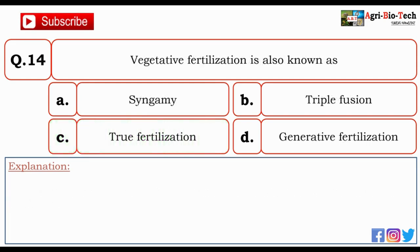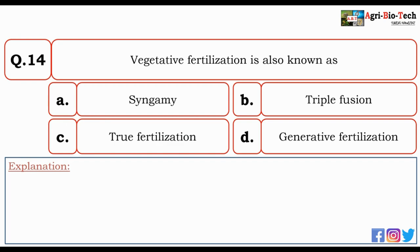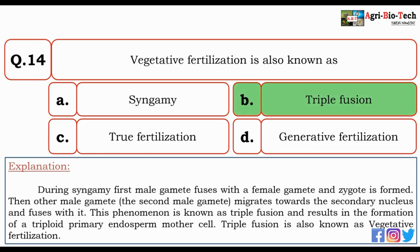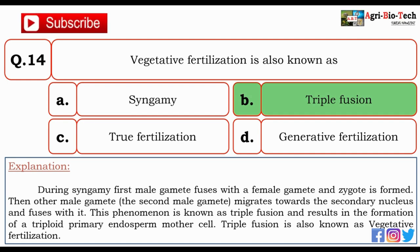Next question: vegetative fertilization is also known as — syngamy, triple fusion, true fertilization, or generative fertilization? The correct answer is B — triple fusion. During syngamy, the first male gamete fuses with the female gamete to form the zygote. Then the second male gamete migrates toward the secondary nucleus and fuses with it. This phenomenon is known as triple fusion, resulting in the formation of the triploid primary endosperm mother cell. Triple fusion is also known as vegetative fertilization.